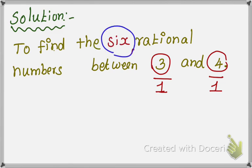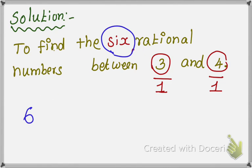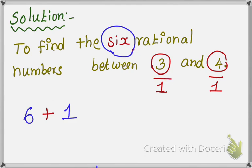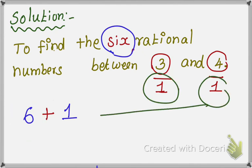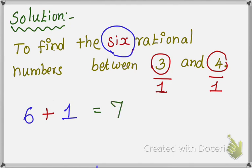To find 6 rational numbers, you take 6 values. So you take 6 values because you are going to find 6 rational numbers, plus this 1 — 1 is the denominator value for both. This 6 is taken from the problem, and this 1 is the denominator of both values. Now we add them to get 7.